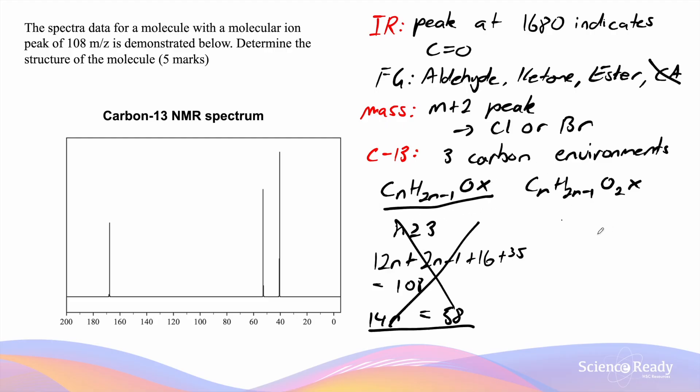Let's now test for Cl again but for this formula, CnH2n-1O2X. Again 12n plus 2n-1 plus 32 which is the molar mass of O times 2 plus 35 equals to 108. We get 14n is equal to 42 by solving this inequality.